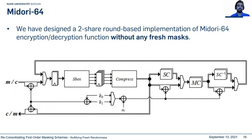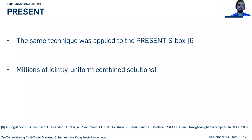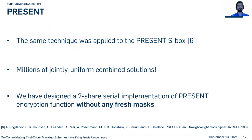We found many solutions for the Midori S-box, and realized a two-share round-based implementation of the Midori S-box supporting both encryption and decryption without any fresh masks. This is the first time such a construction is presented in the literature. We also applied our technique to PRESENT and found millions of secure solutions under Glitch Extended Probing and also uniform, designing a two-share serial implementation — again without any fresh masks, using the minimum number of input shares.